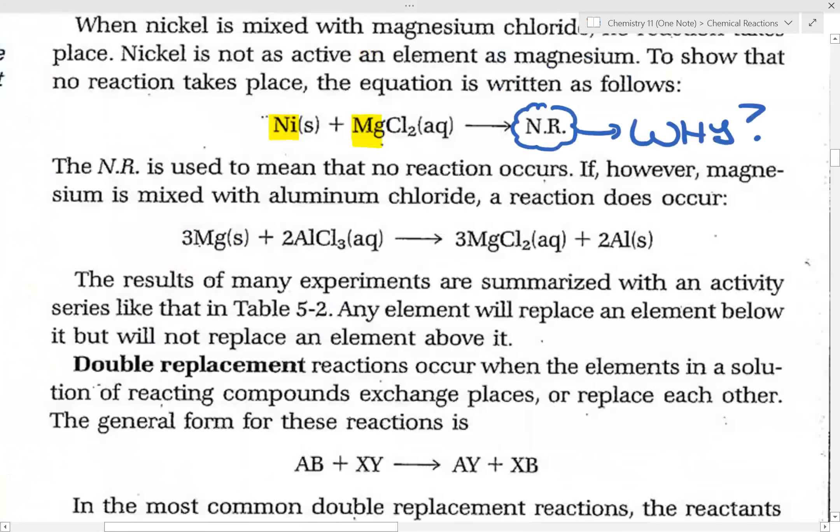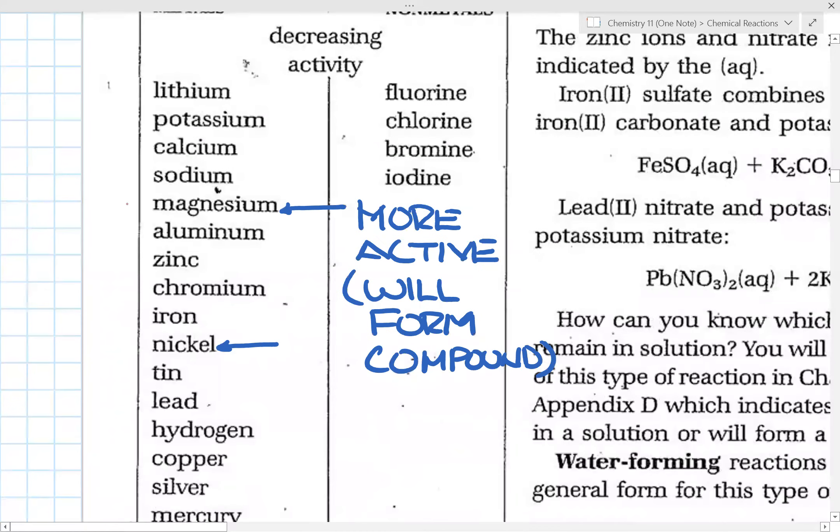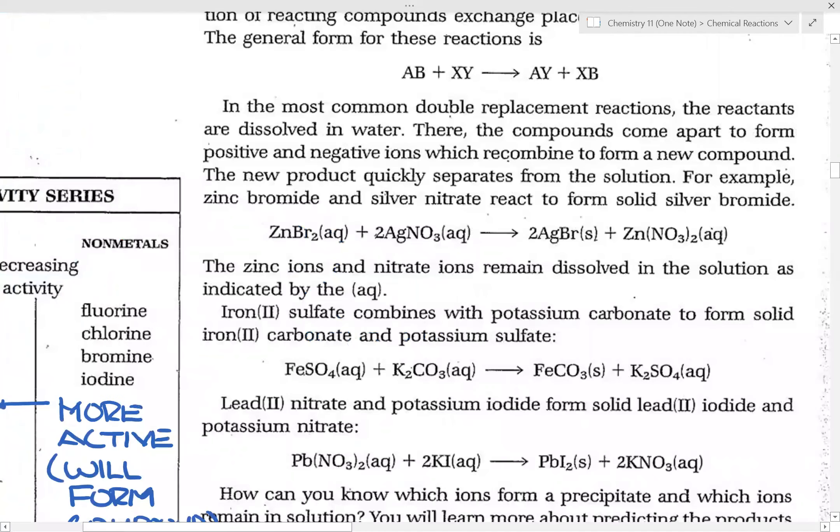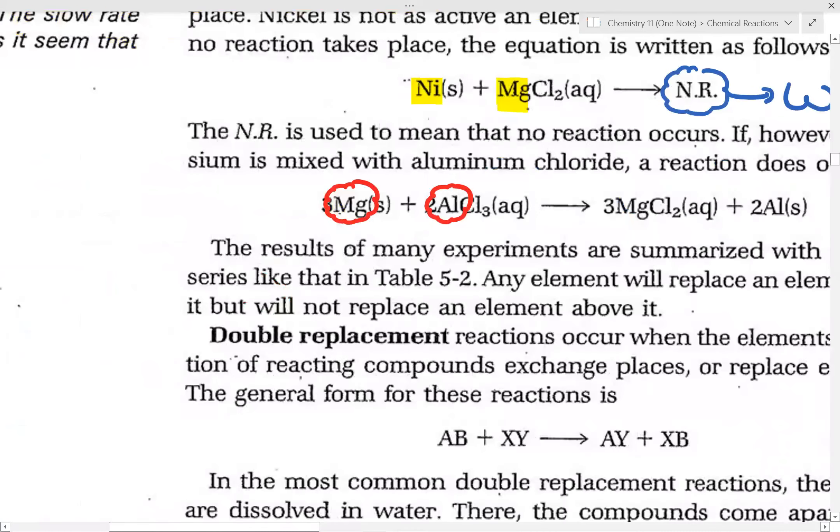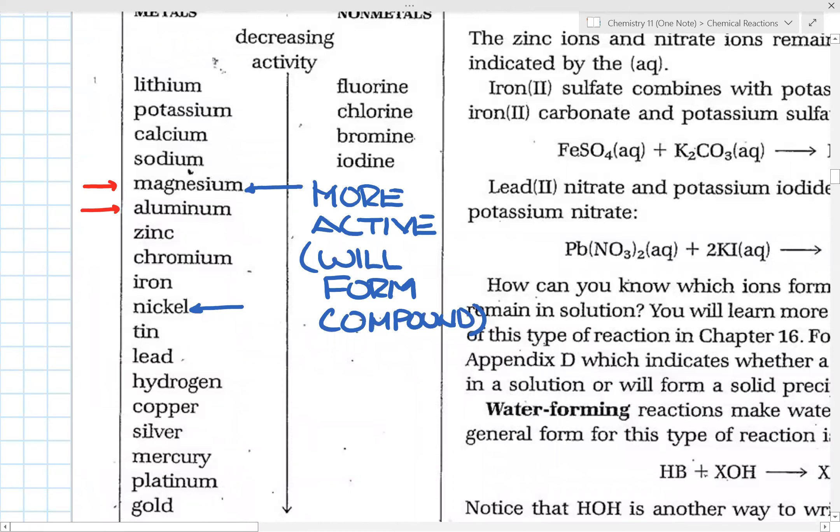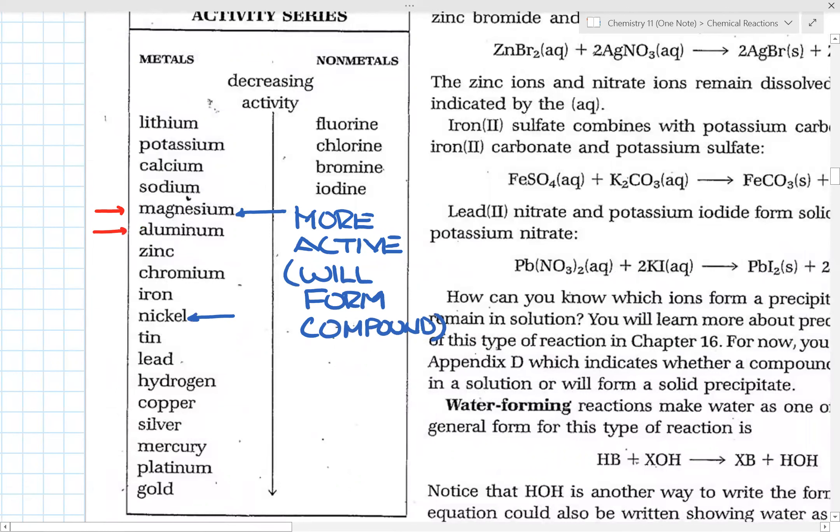And since it is more active than nickel, therefore, will form the compound. Nickel is not as active as magnesium, and so is not able to replace the magnesium to form the compound. Now, in this case, notice here, let's do another example with magnesium. So here we have magnesium as a free element, and now we have aluminum as the compound. So again, looking at the table here, if we compare magnesium versus aluminum, notice why does the reaction work is because magnesium is the more active one will form the compound.